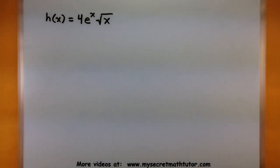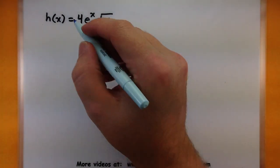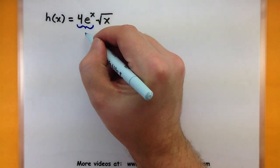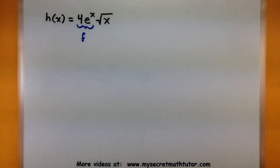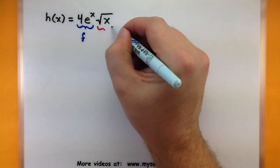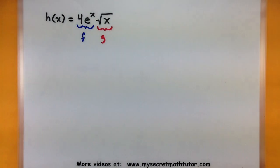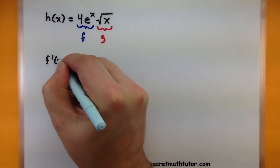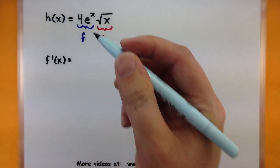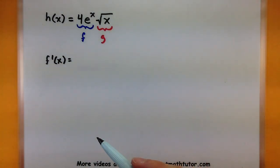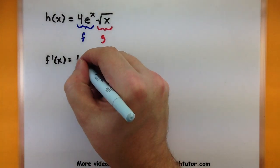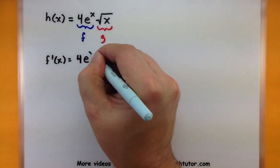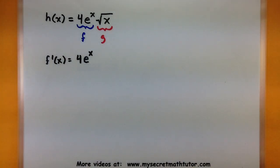In this last example, we want to figure out the derivative of 4 times e to the x multiplied by the square root of x. Let's grab our two functions: 4e to the x is our first function f, and the square root of x will be our second function g. Finding their derivatives individually — the derivative of e to the x is e to the x, and the 4 is just a constant, so the derivative of f is 4e to the x.